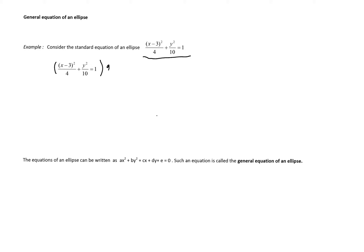Suppose we have the equation of an ellipse in the standard form: (x-3)²/4 + y²/10 = 1. We can transform this equation by eliminating the denominators and the parentheses. So how do we do that?